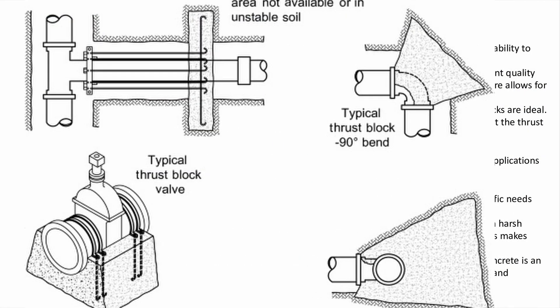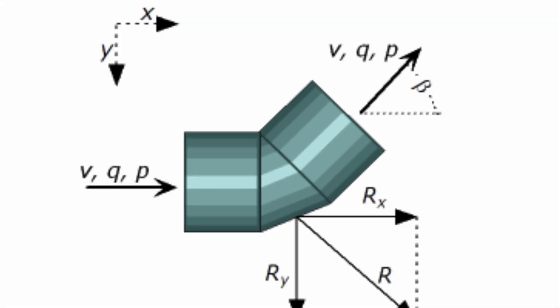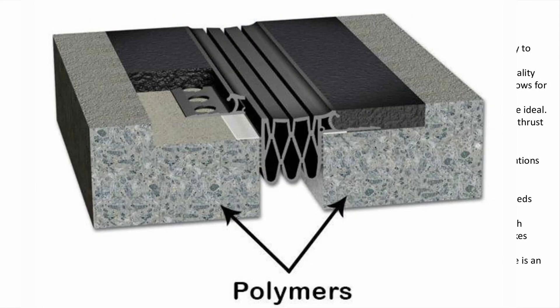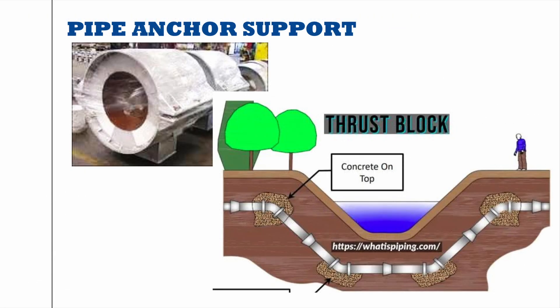Composite material thrust blocks are gaining popularity due to their advanced properties, catering to specific needs such as weight reduction and enhanced environmental resistance. They can be made of fiberglass, renowned for its resistance to corrosion and lightweight nature. Fiberglass thrust blocks are used in harsh environments like chemical processing facilities or marine applications. Polymer concrete, combining the strength of traditional concrete with the advantages of plastics, is an excellent choice for areas with acidic soils or high moisture levels, offering a balance of strength, lightweight, and resistance to environmental factors.